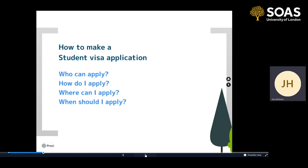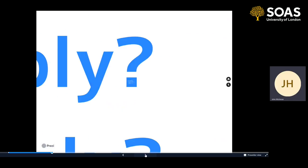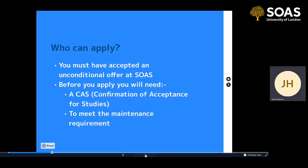So how to make a student visa application — who can apply? You must have accepted an unconditional offer at SOAS, and before you apply, you will need a thing called a CAS, or a confirmation of acceptance for studies. A CAS is an electronic document that contains all the details of your visa sponsorship at SOAS, including your programme and details that you provide about your passport. The CAS is uploaded onto a system that UK Visas and Immigration — UKVI — have access to, as they're the people that will grant your visa. You've also got to meet the maintenance requirement, meaning you have to have enough money for your application.